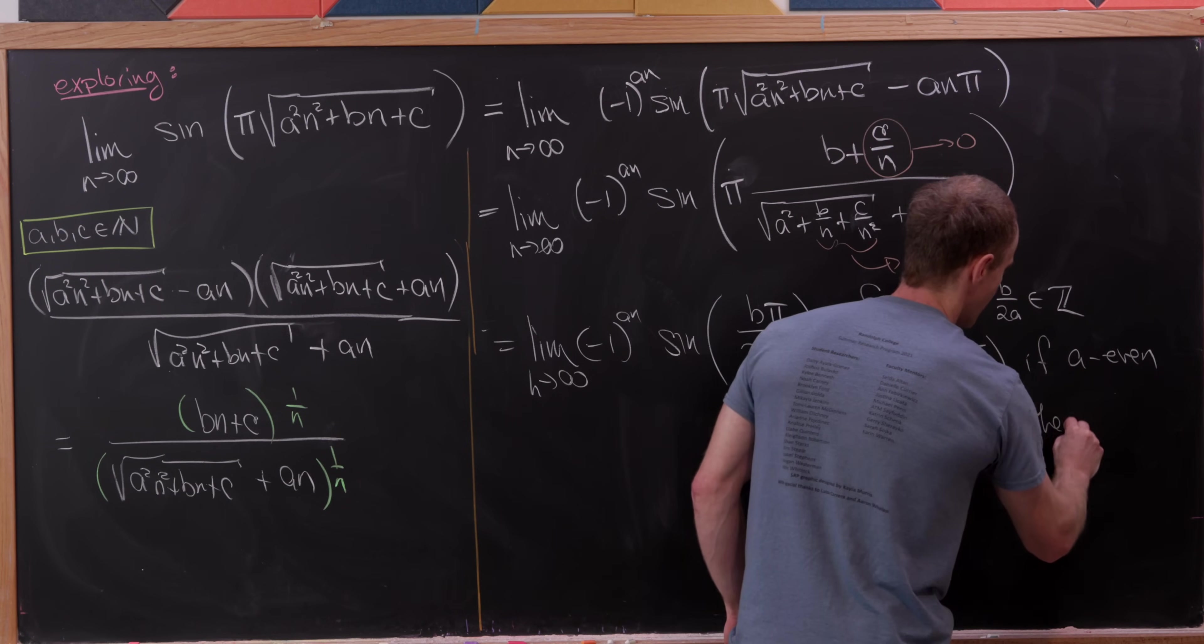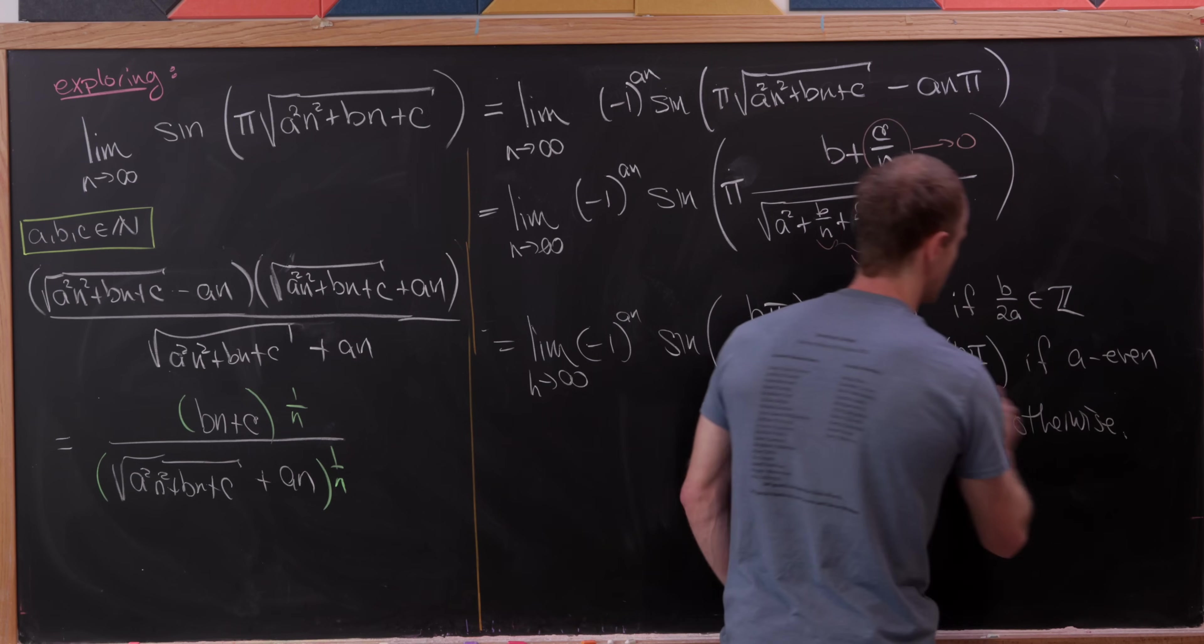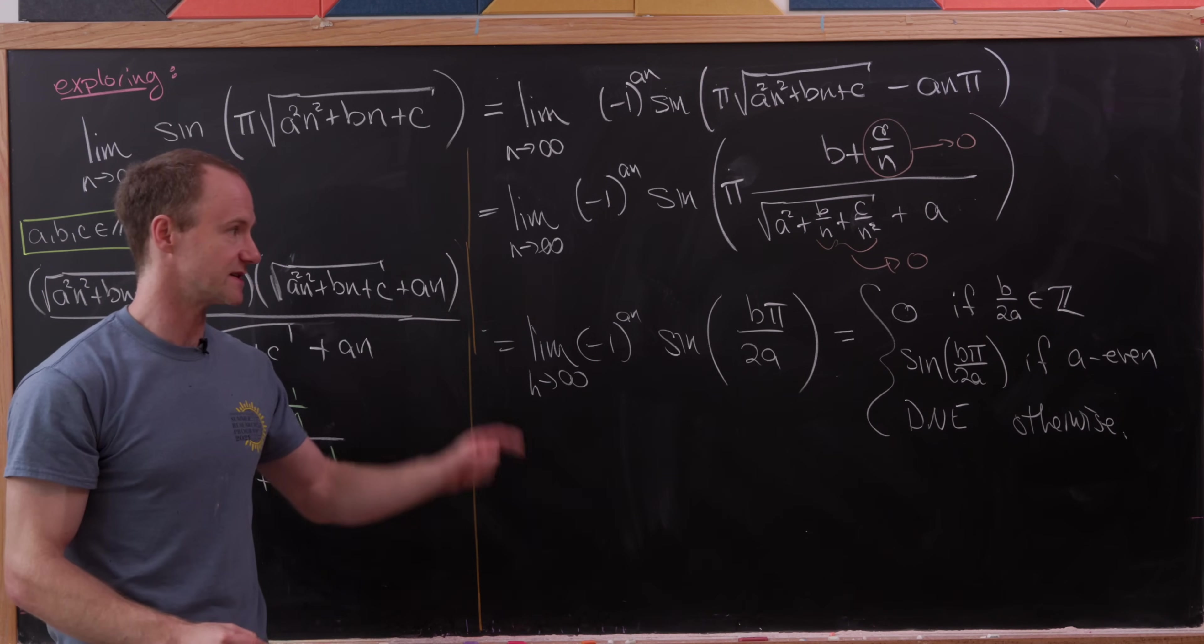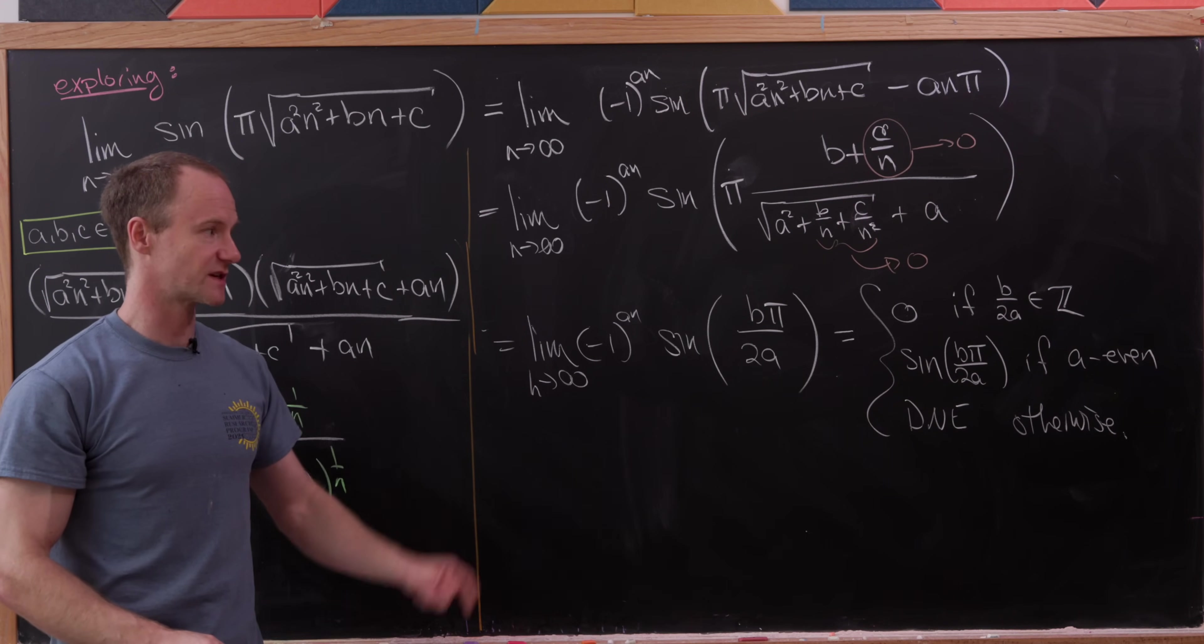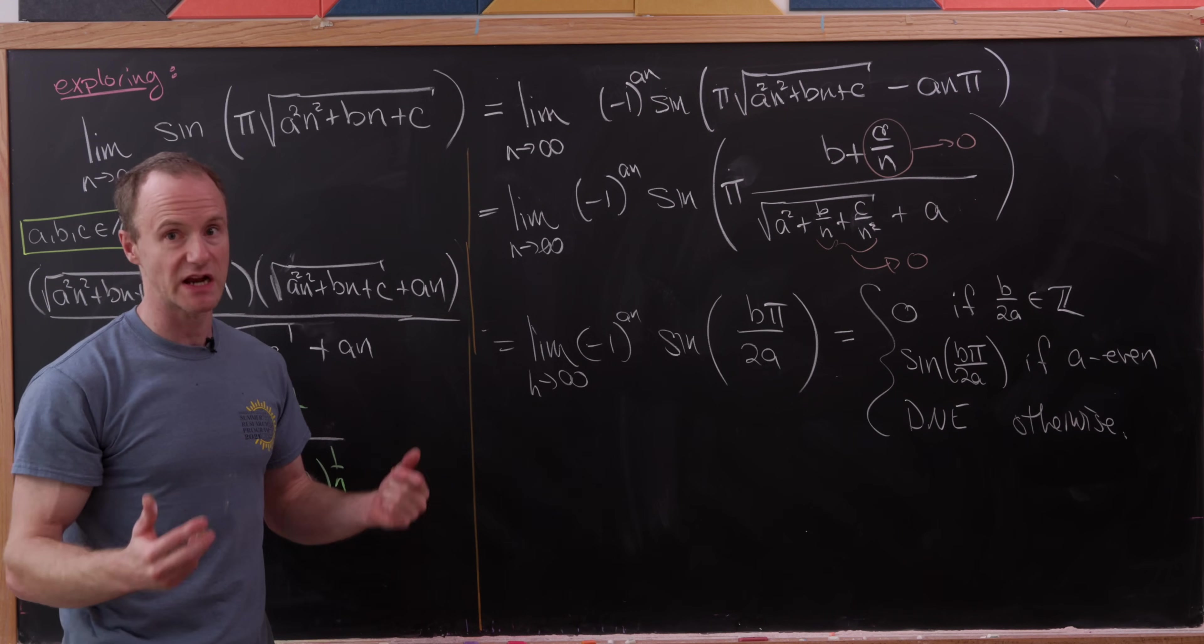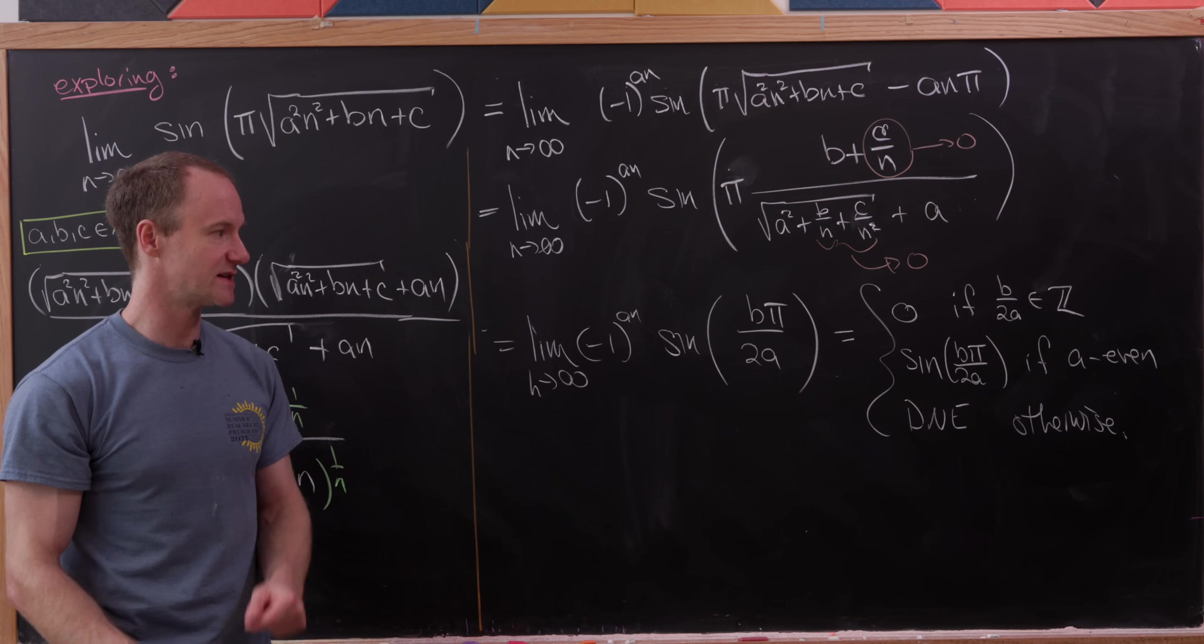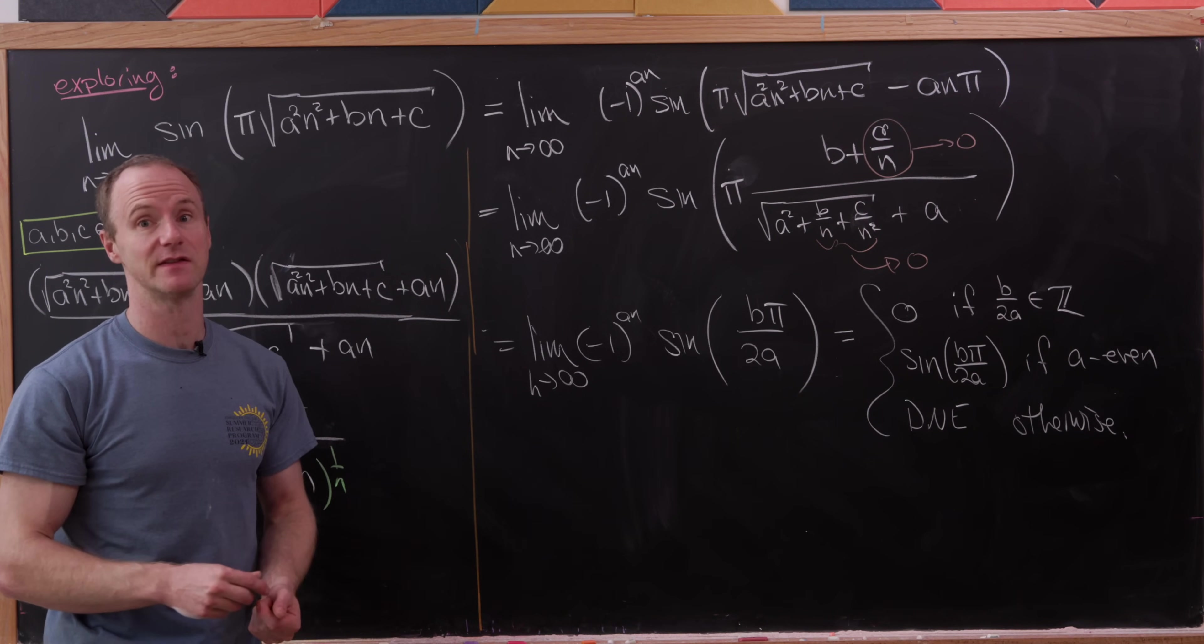And so we'll just put otherwise there. So we have really solved this problem in all cases. It's zero in that first case, this strange value of sine in the second case, and it does not exist in the third case.